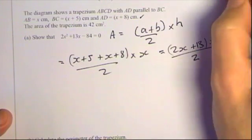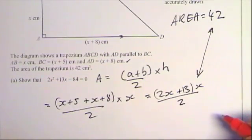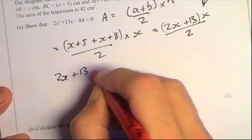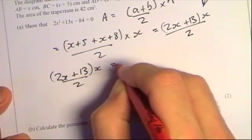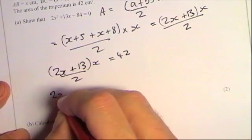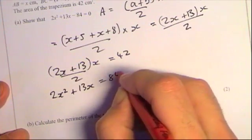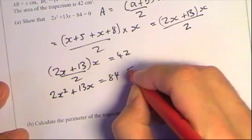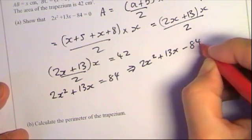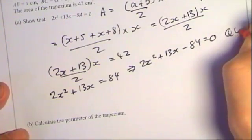This area equals 42, so (2x + 13) × x / 2 = 42. Multiplying both sides by 2: 2x² + 13x = 84, which gives 2x² + 13x − 84 = 0. That matches exactly what we were asked to show — QED.